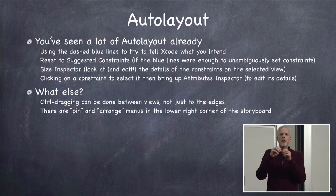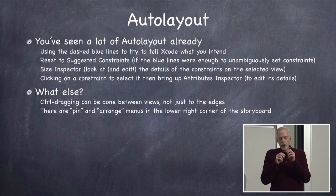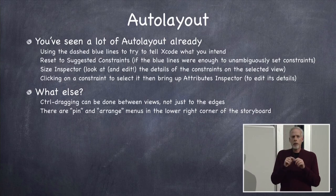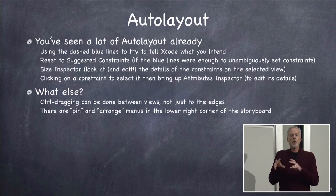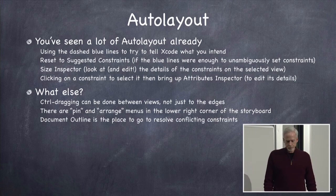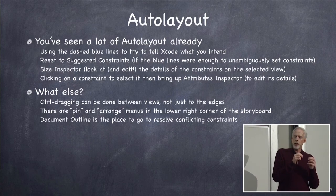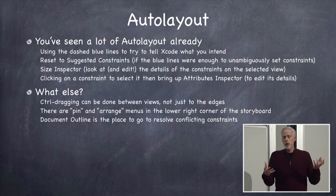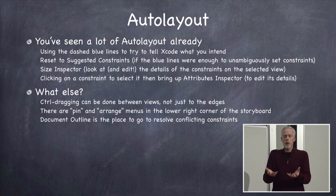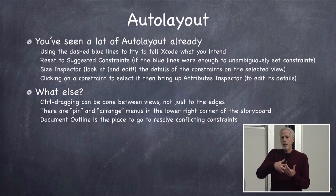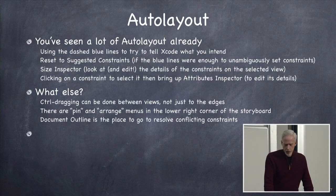When clicking becomes a problem, you can use control-shift-click to drill down on overlapping views, or use the document outline to select things and apply constraints from the menus. The document outline is the go-to place to resolve constraint problems — both insufficient constraints, where you haven't put enough for iOS to know where the view goes, and conflicting constraints, where two constraints pull against each other and iOS doesn't know what to do.